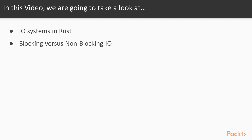Here we're going to learn about Rust IO systems, and then learn the advantages and disadvantages. We're also going to take a look at the difference between them.